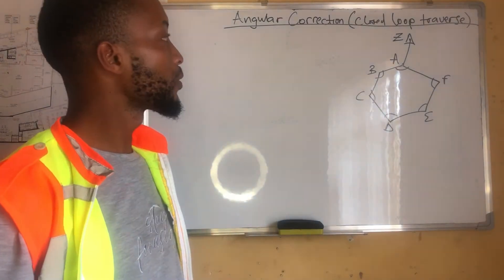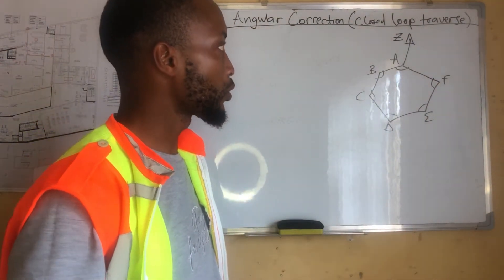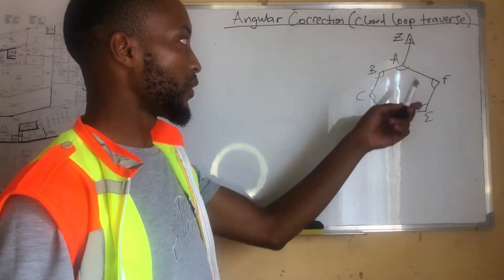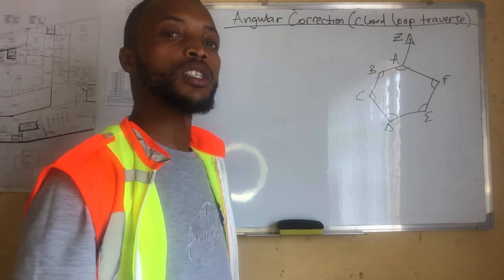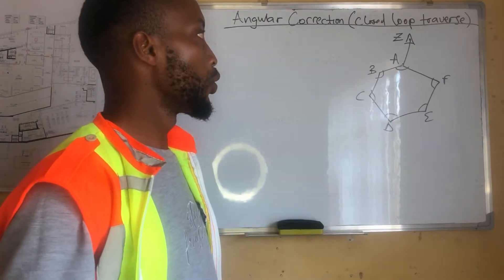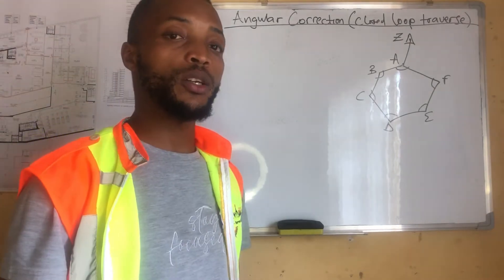For a start, we have a sketch diagram here for a closed loop traverse. We are given the interior angles for the traverse. In some cases, we will be given the exterior angles.